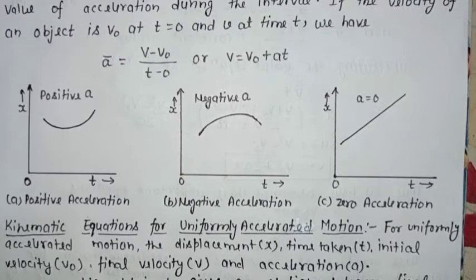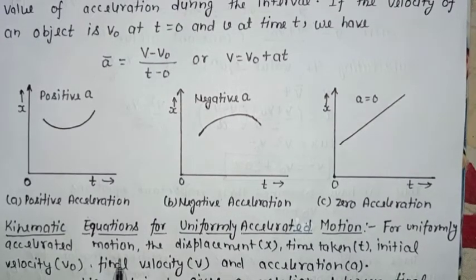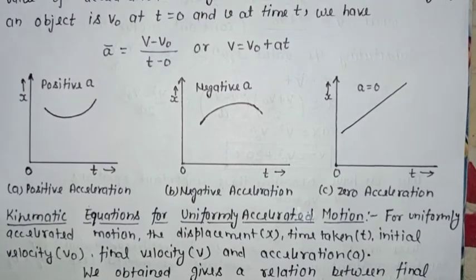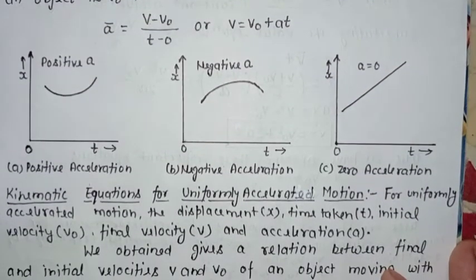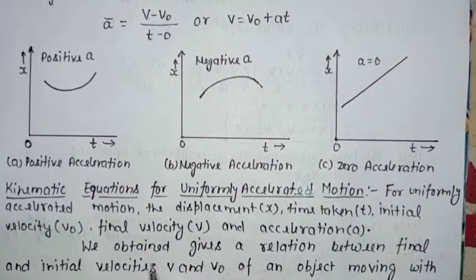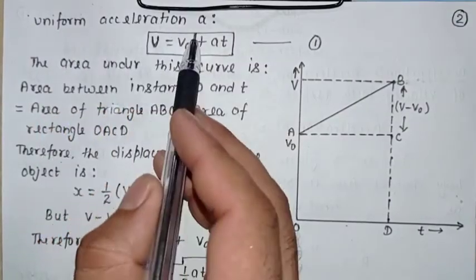We will discuss and prove these three kinematic equations for uniformly accelerated motion. The variables are: displacement x, time taken t, initial velocity V₀, final velocity V, and acceleration a. Here we will find out the relation between initial and final velocity — an object moving with uniform acceleration a.